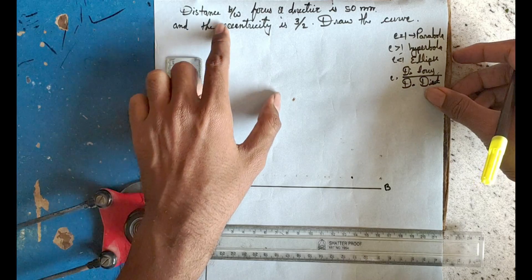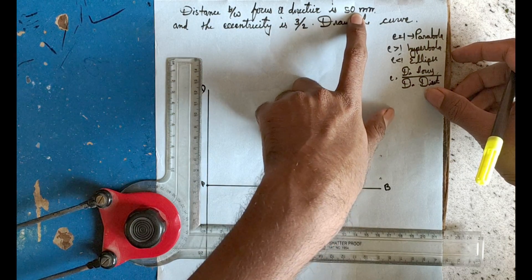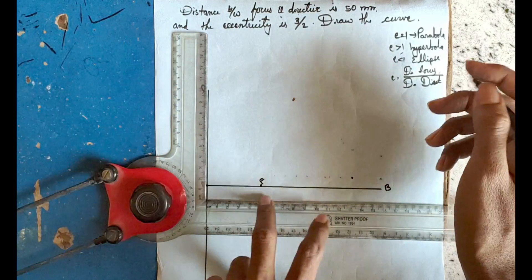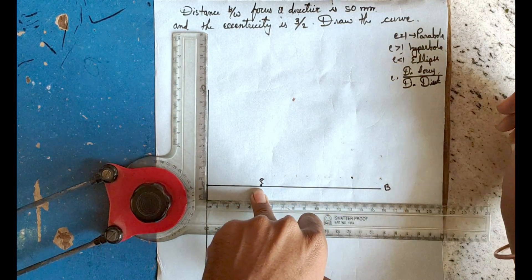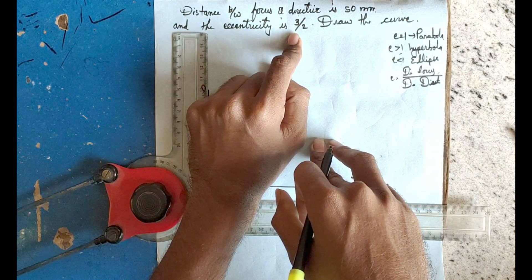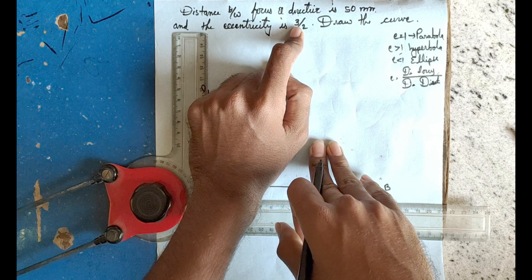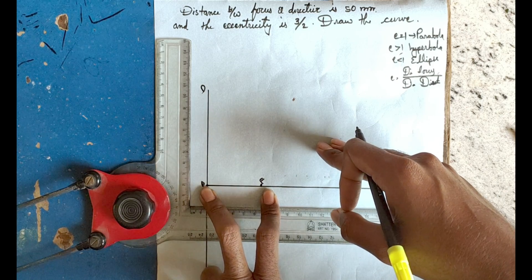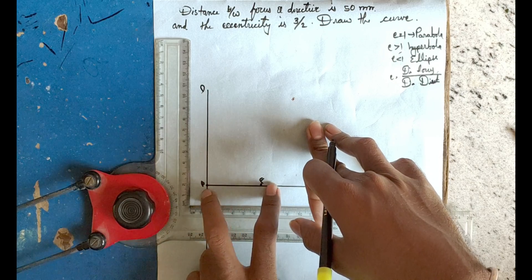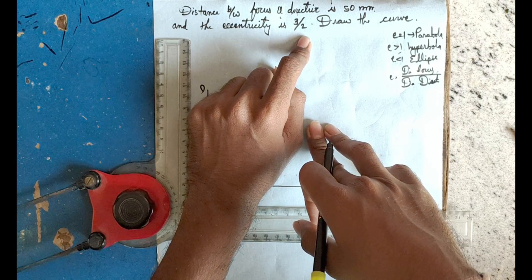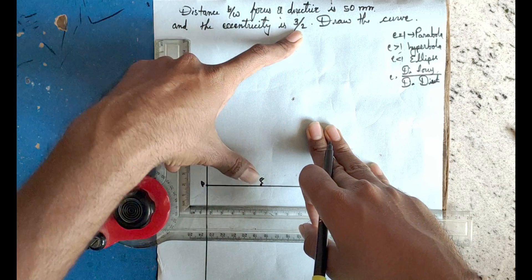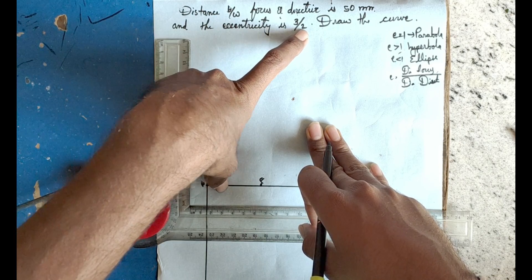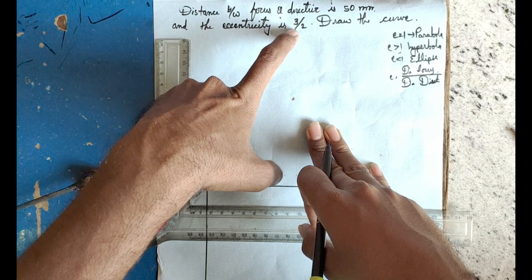The distance between the focus and directrix is 50mm. This line is F — the focus. The eccentricity is 3 by 2, meaning we divide the distance between the directrix and focus. From focus to point we draw one path, and from directrix to point we draw two paths.